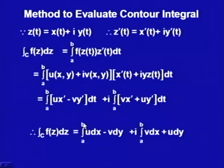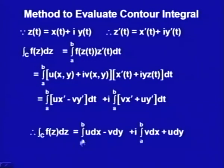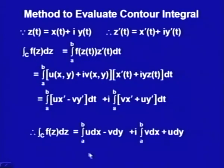The limits a and b are defined according to the parameterization we have taken. Since all these functions are continuous, they are integrable and all these integrals exist. This method of evaluation of the contour integral will give the required integral, which is again a complex number.